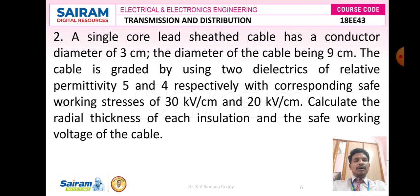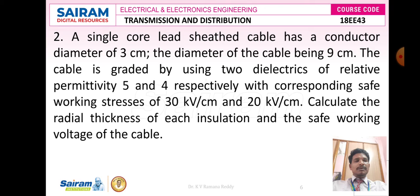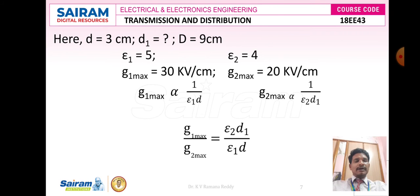Let us go through problem number 2. A single core lead sheathed cable has a conductor diameter of 3 cm, and the diameter of the cable is 9 cm. The cable is graded by using two dielectrics of relative permittivity 5 and 4 respectively, with corresponding safe working stress of 30 kV per cm and 20 kV per cm. Calculate the radial thickness of each insulation and the safe working voltage of the cable.